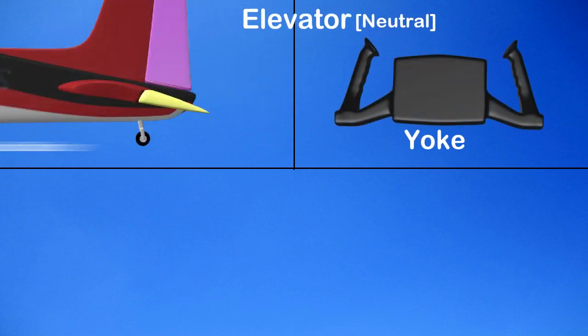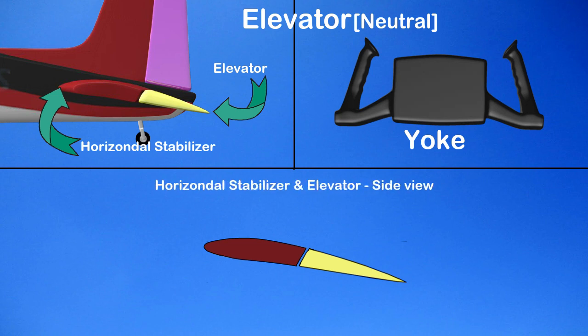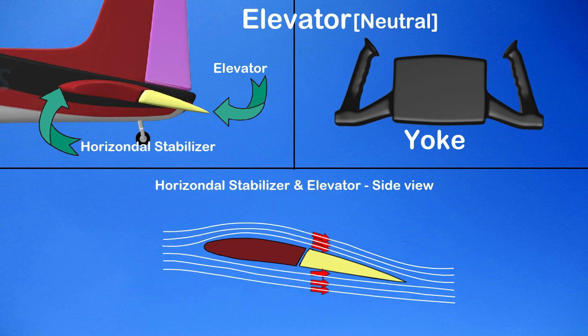Let us discuss the elevator. On the left top side, you can see the tail of an aircraft with the horizontal stabilizer and elevator. An exploded view of the elevator and horizontal stabilizer is shown at the bottom. The elevator is in the neutral position, and there will not be any change in the aircraft's attitude.